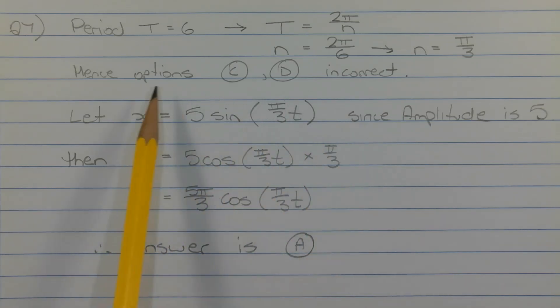So a possible expression for the displacement is x equals 5 sine of π over 3 times t, where we found π over 3 previously.